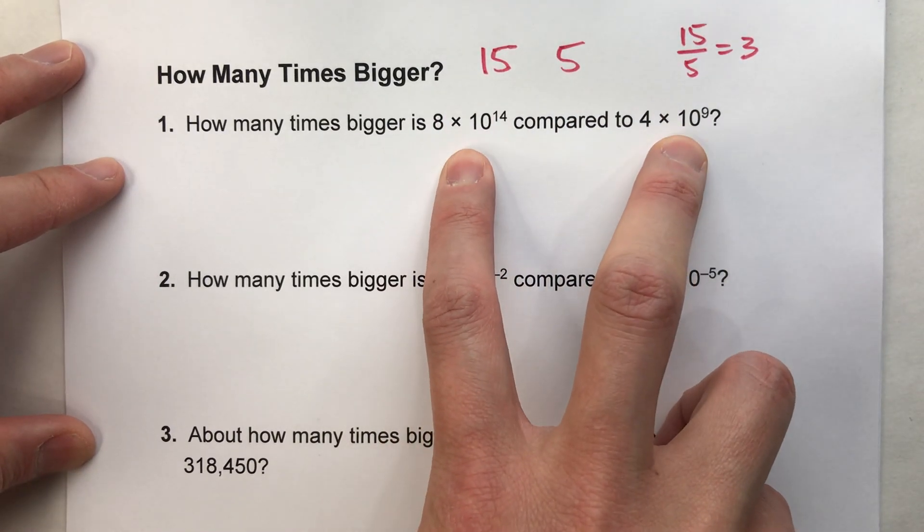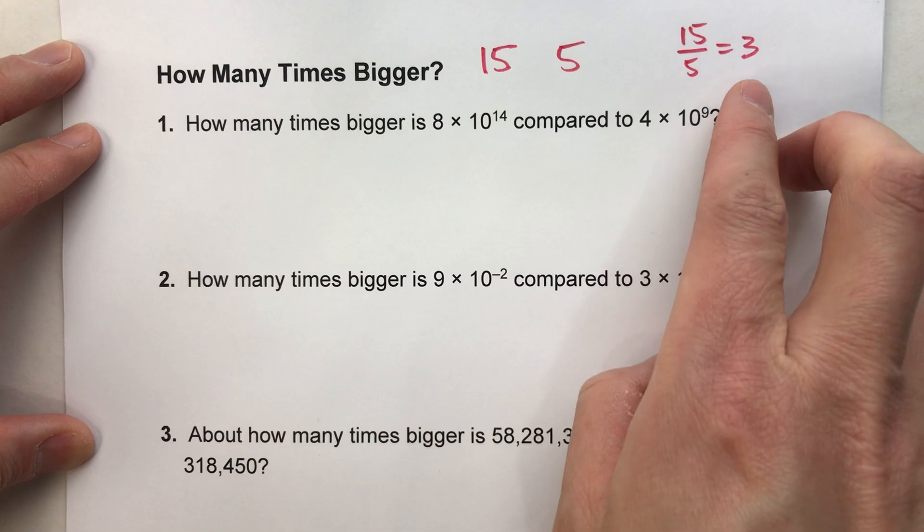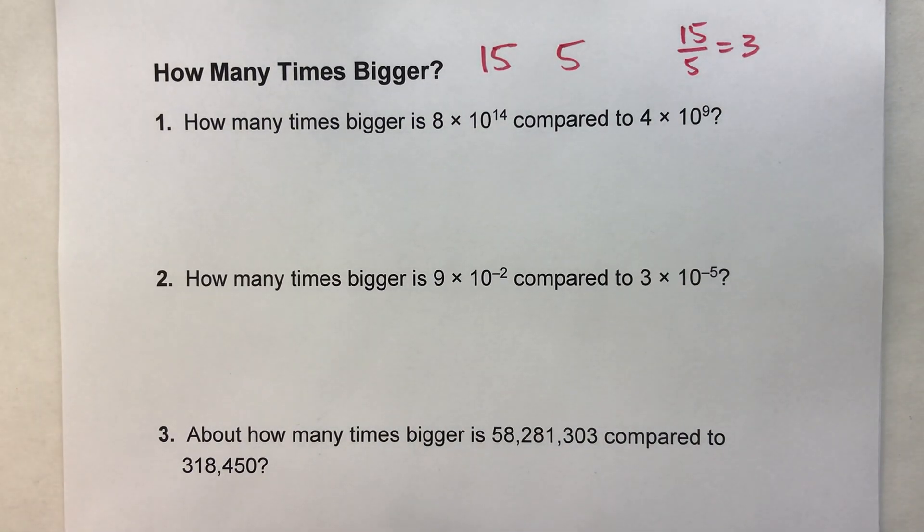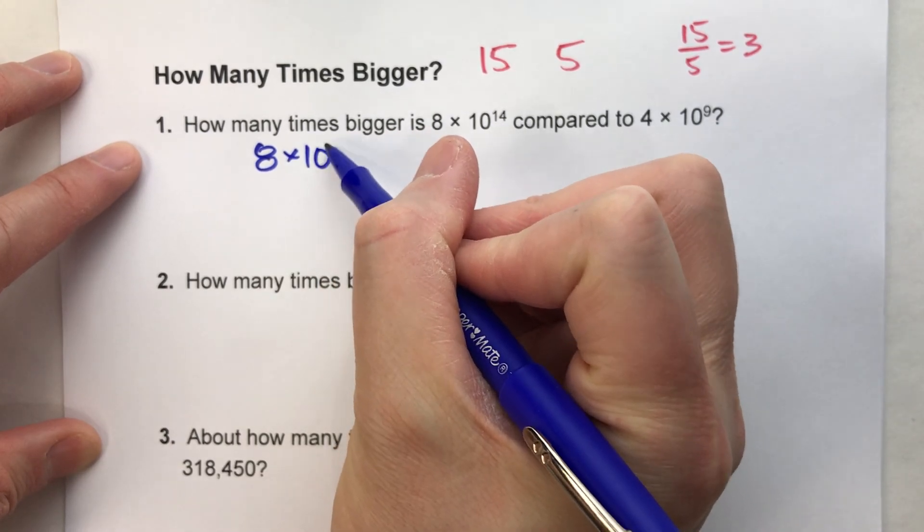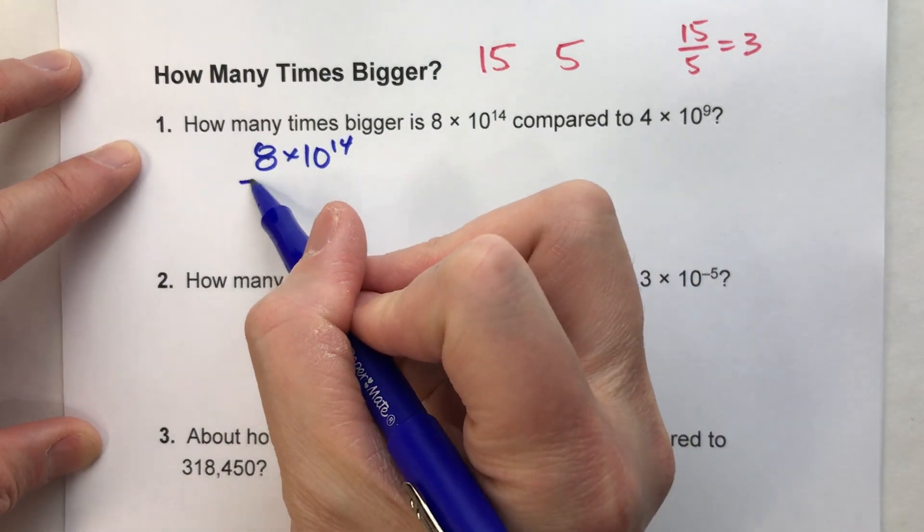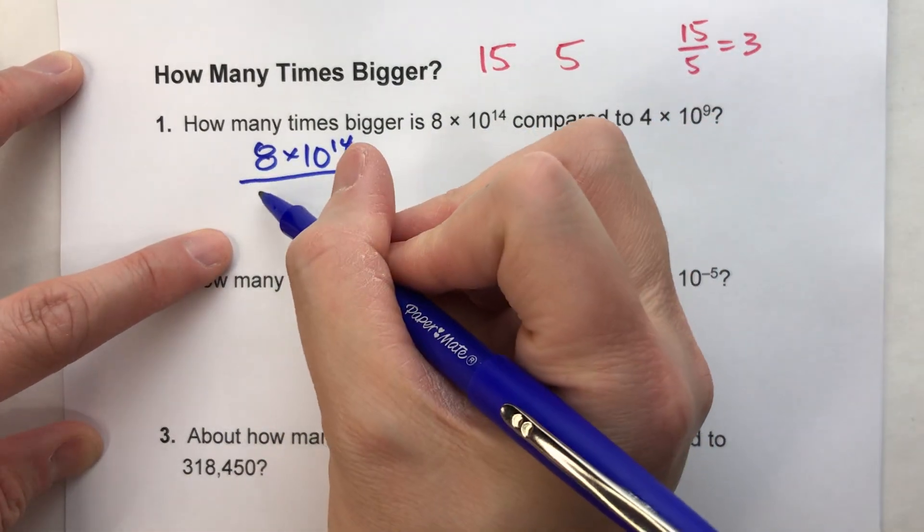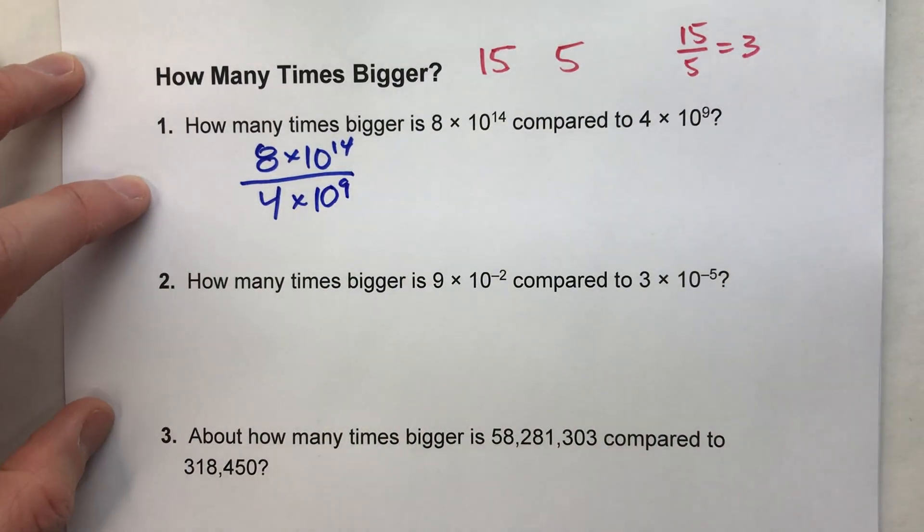So just like the 15 and 5 example, what we're going to do here is we're going to divide these to see how many times bigger it is. So let's do that. We're going to take the bigger number, 8 times 10 to the 14th power, and we're going to divide it by the smaller number, which is 4 times 10 to the 9th power.